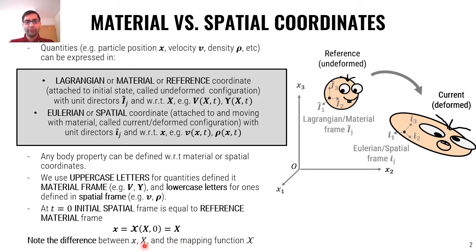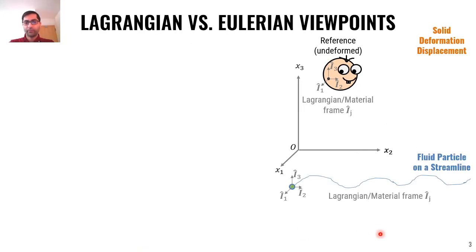Just note the difference between lowercase x, capital X, and the mapping function between them. Based on that, we can define two different viewpoints for solving problems in continuum mechanics. We call them the Lagrangian and Eulerian viewpoints.